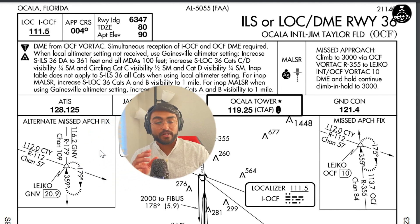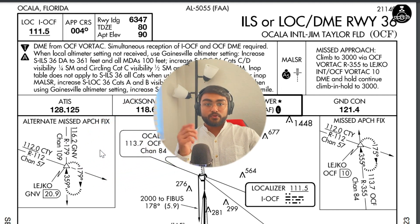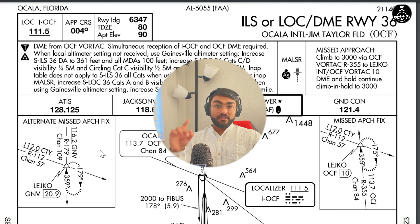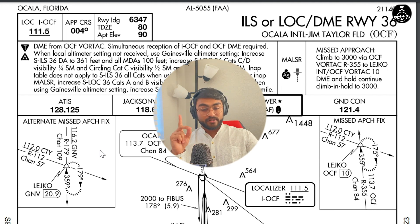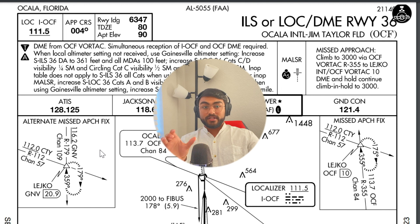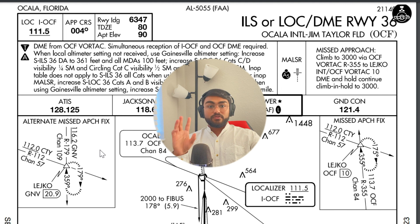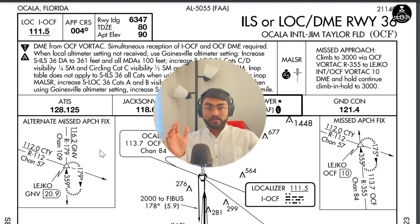That's how we use the inoperative components table, or deal with the situation when the approach light system or any visual aid has gone inoperative. The rule of thumb is to first look at the notes and then go to the inoperative components table. When you go to the table, make sure you use the correct table — 1, 2, or 3. Table 1 is different from table 2 because table 2 applies only to approaches with RVR 1800, 2000, or 2200. Be careful to identify the correct approach light system type for that particular runway.